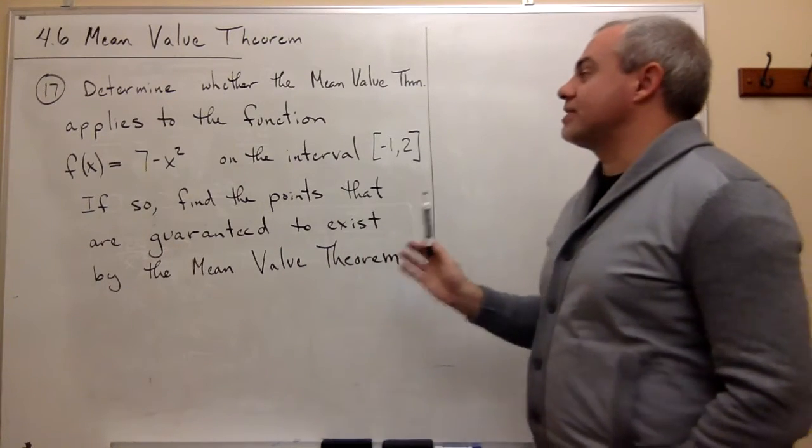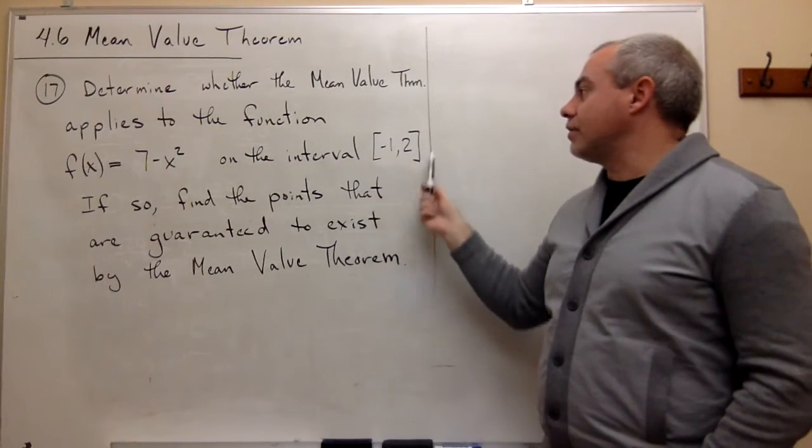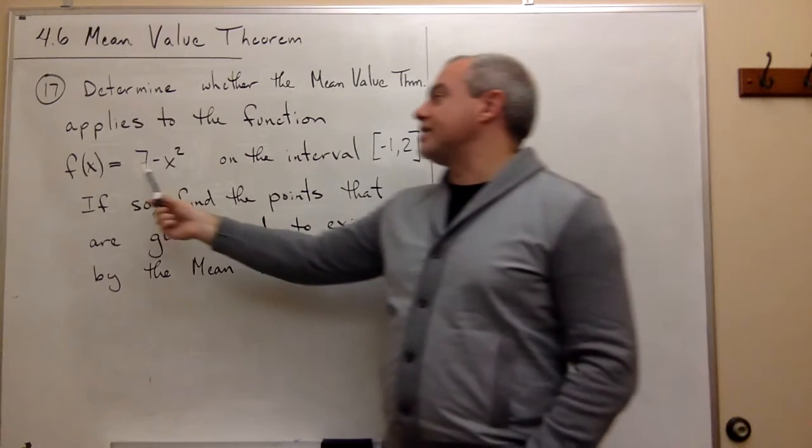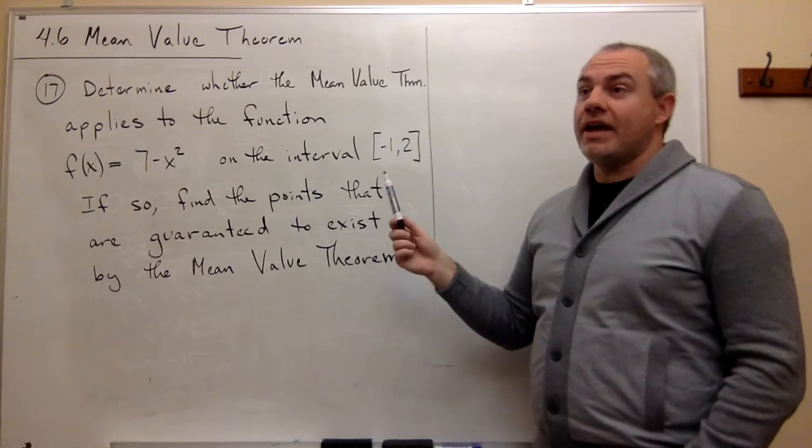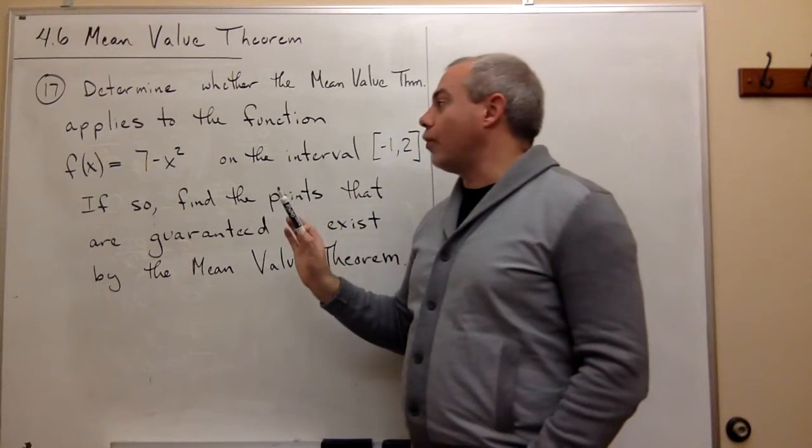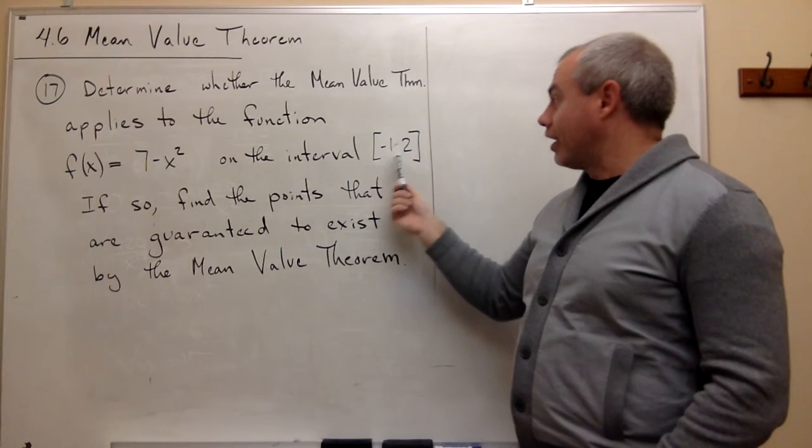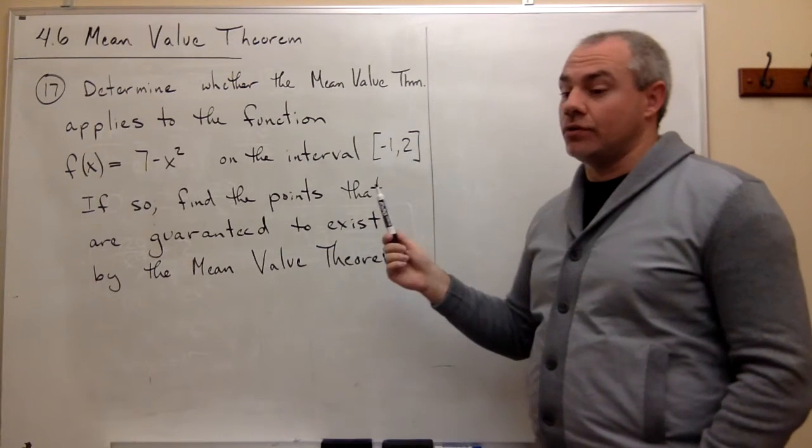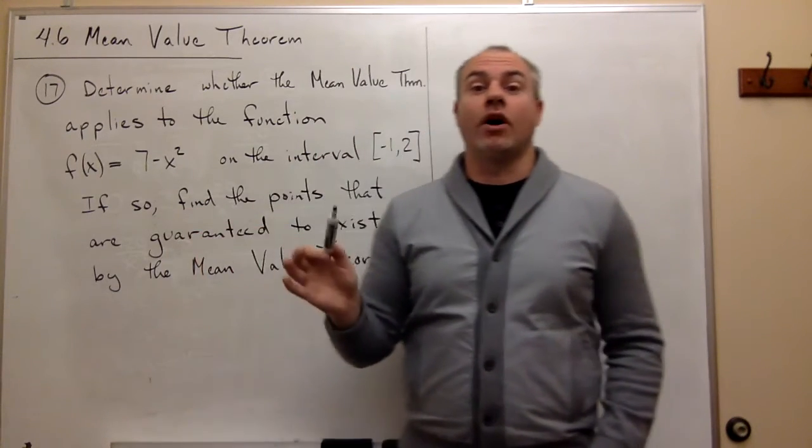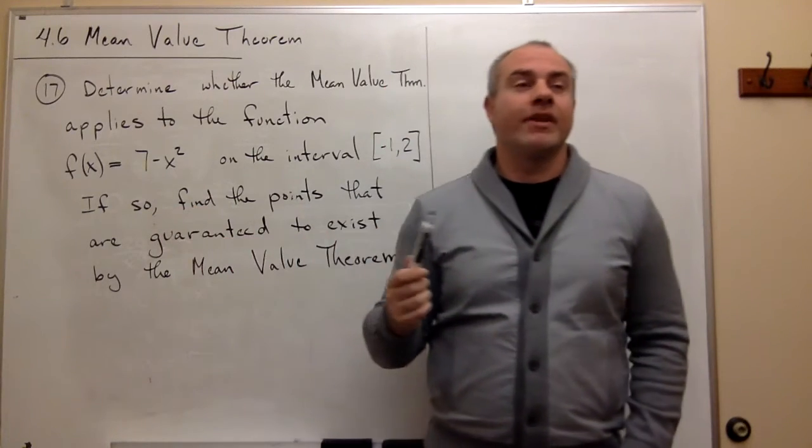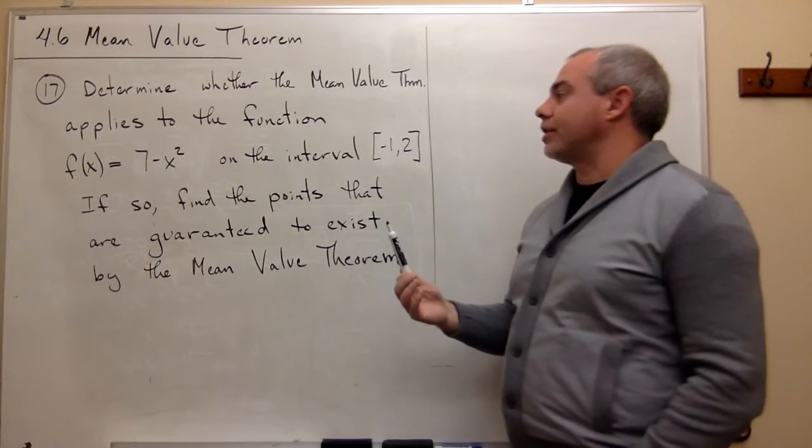First of all, the mean value theorem says that if we have a function that's continuous on this closed interval and it's differentiable on this interval except open, and then there exists some point in between f of a or negative 1 and f of b negative 2 where the slope of the secant line is equal to the slope of the function in between somewhere. We could write this down. I'm sure that you have this in your textbook what the mean value theorem is.